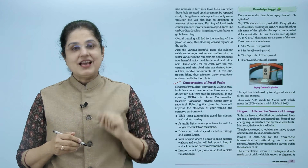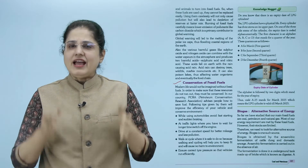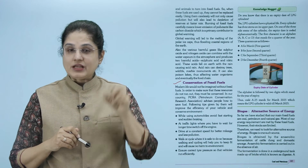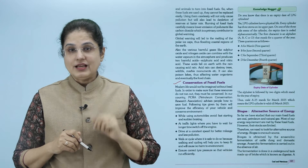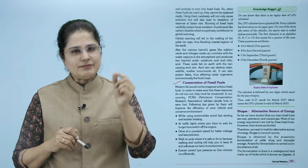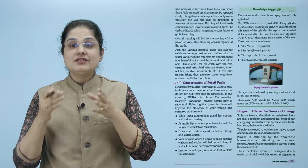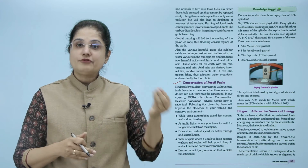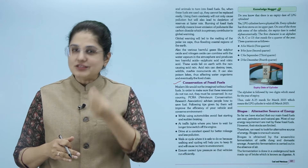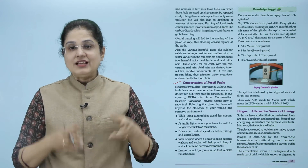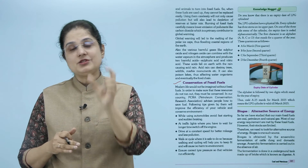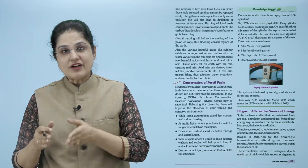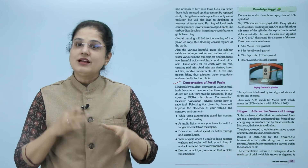Do you know that there is an expiry date of LPG cylinders? Yes, LPG cylinders have a physical life. Every cylinder has three stems on its upper part. On one of the three side stems, the expiry date is coded alphanumerically. जो पहले characters हैं वो alphabet A, B, C या D हैं - उनका मतलब है कि year के कौन से quarter में ये cylinders manufacture हुए थे: A for March - first quarter, B for June - second quarter, C for September - third quarter, and D for December - fourth quarter। इन alphabets के बाद दो digits दिये होते हैं जो expiry का year बताते हैं। तो अगर code है A25, इसका मतलब है कि March 2025 तक ही वो LPG cylinder valid है, उसके बाद use नहीं करना चाहिए।